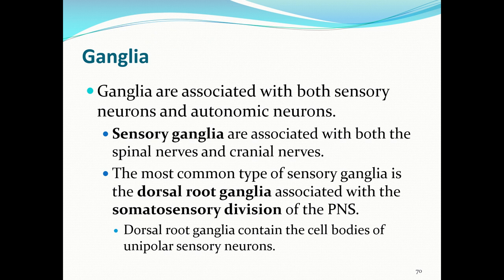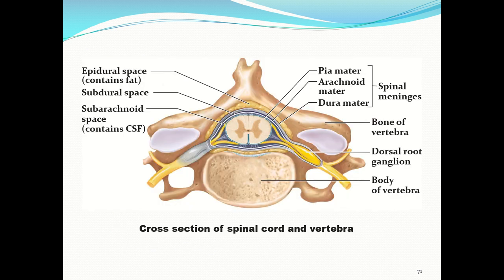Ganglia are associated with both sensory neurons and autonomic motor neurons. Sensory ganglia are associated with both spinal nerves and cranial nerves and are swellings containing cell bodies of unipolar neurons. The most common type is the dorsal root ganglia, associated with the somatosensory division of the peripheral nervous system, containing cell bodies of unipolar sensory neurons. In the illustration, the dorsal root ganglia swelling is right next to the spinal cord.